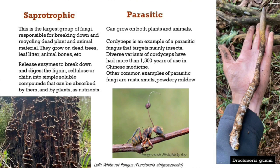Saprotrophic fungi break down organic matter — plants and animal material. They grow on dead trees, leaf litter, and bones. They release enzymes to break down and digest lignin, cellulose, and chitin into simple soluble compounds that can then be absorbed by plants as nutrients. Parasitic fungi can parasitize on plants and animals — types of cordyceps actually parasitize on insects and are used a lot in Chinese medicine. Other common examples include rust, smuts, and powdery mildew.